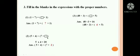The third question: Fill in the blanks in the expression with the proper numbers. The first is 1 into 7 equals dash into 1. So 1 into 7 equal sign is given, so 7 into 1.